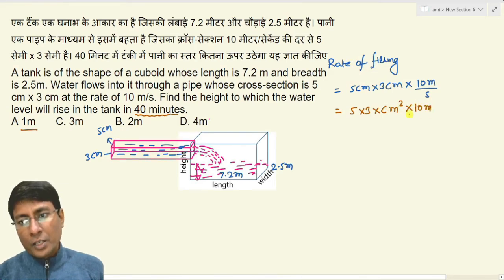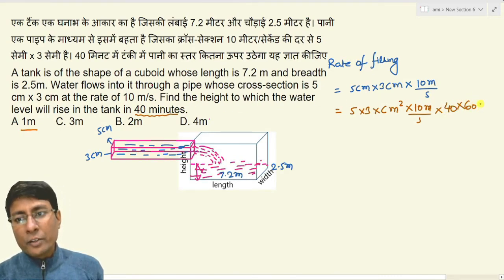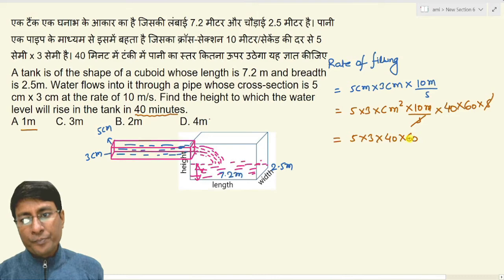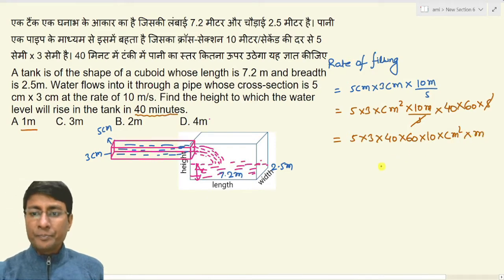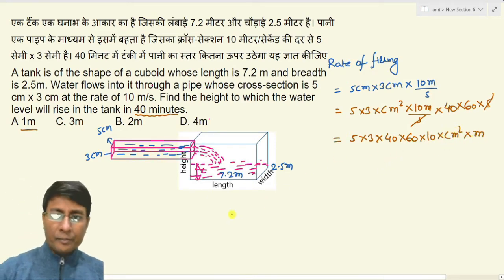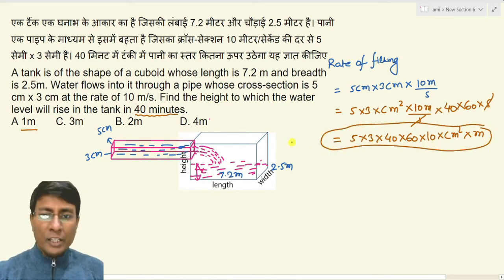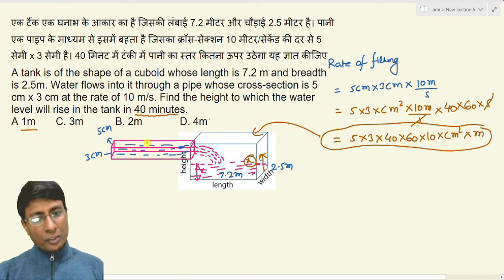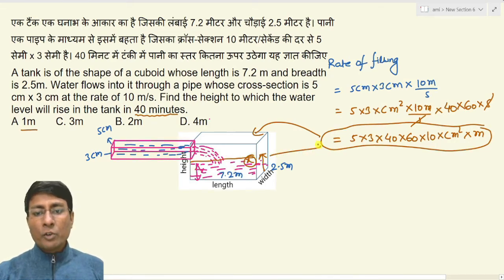So simply what is 5 centimeters into 3 centimeters, you can multiply by the rate and then by 40 minutes to get the total amount of water filled. For the height increase, assume the height increase is x. So this means x level, that is equal to volume.